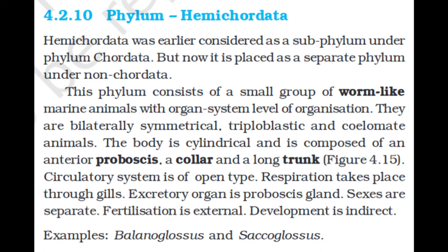Section 4.2.10: Phylum Hemichordata. Hemichordata was earlier considered a sub-phylum under Phylum Chordata, but now it is placed as a separate phylum under non-Chordata. This phylum consists of a small group of worm-like marine animals with organ system level of organization. They are bilaterally symmetrical, triploblastic, and coelomate animals. The body is cylindrical and composed of an anterior proboscis, a collar, and a long trunk. The circulatory system is of open type. Respiration takes place through gills. The excretory organ is the proboscis gland. Sexes are separate; fertilization is external; development is indirect. Examples: Balanoglossus and Saccoglossus.